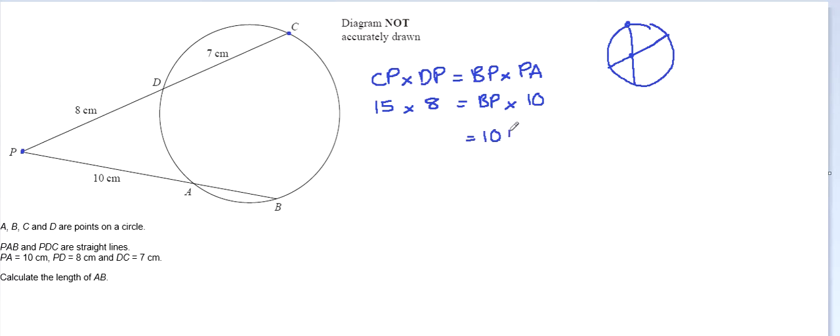So you've got 10 BP is equal to 80 plus 40, that's 120, which means BP, if I divide by 10, must be 12.